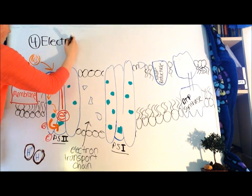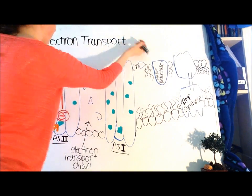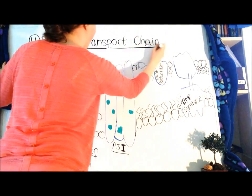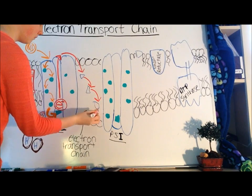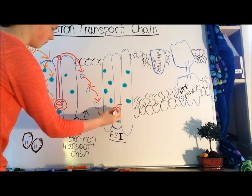Next is step four, the electron transport chain between Photosystem II and Photosystem I. This is a system of proteins that bounce the electron all the way down to Photosystem I, into the reaction center.